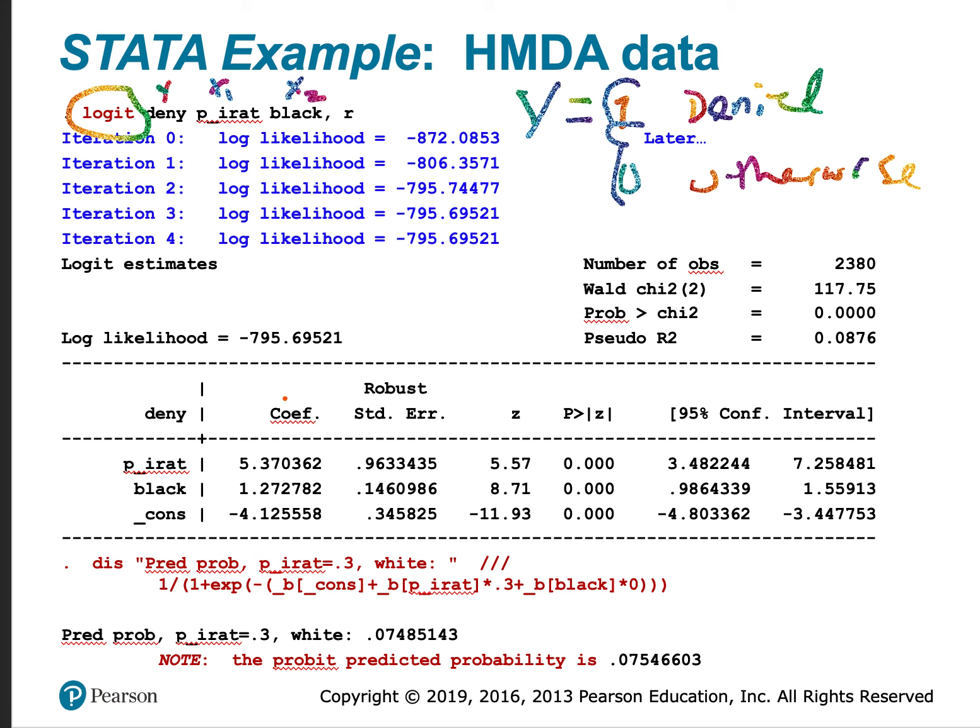We've run this regression in Stata and we get the following coefficients: 5.37 on the payment to income ratio, 1.27 on black, negative 4.12 on constant. We interpret the p-values in the same way as we would the z-statistics, the robust standard errors. We'll talk about why we have z-statistics and the chi-square as well as the pseudo r-squared a little bit later.